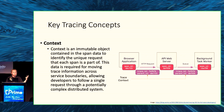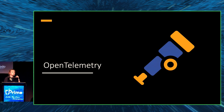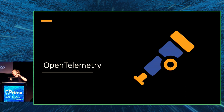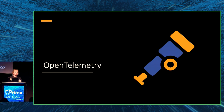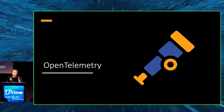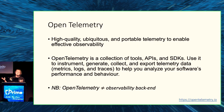Now that we know about logs, metrics, and distributed traces, how do we actually enable them? In the past, each observability backend required its own implementation libraries and agents for emitting data — there was no standardized data format. If a company chose to switch observability backends, they had to re-instrument all their code and configure new agents. This was a lot of hassle. Work was done to create a standard, and this is where OpenTelemetry came in.